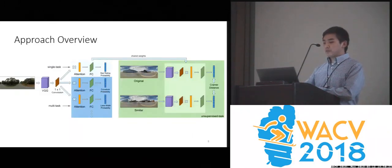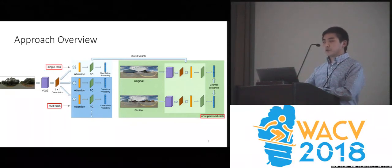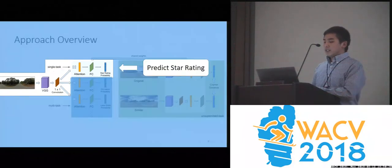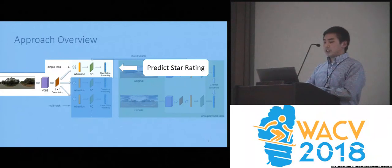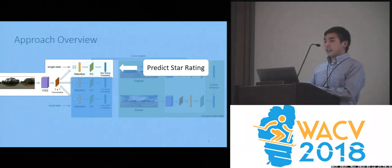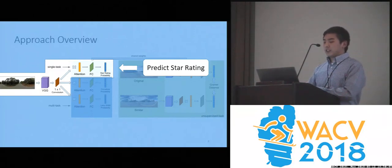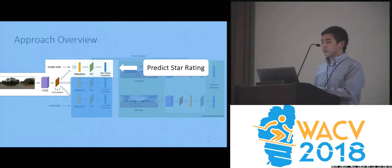Here is an overview of our approach. It is split into three different components: single task, multi-task, and unsupervised task. The single task goal is to predict the star rating. We begin with a panoramic image passed through convolutional layers of VGG, a one-by-one convolutional layer, followed by an attention mask, and a fully connected layer to obtain the star rating probability distribution. The attention mask is a learnable task-specific layer that allows the network to focus on specific parts of the panorama for prediction.